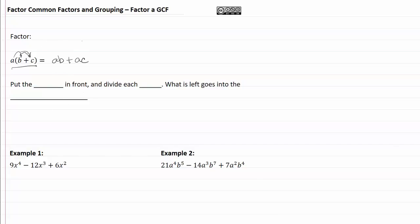Remember that a factor is something that's multiplied. We're going to put the GCF, the greatest common factor, in front and divide each term by the GCF. And then what is left over goes into the parentheses. So here is the leftover, out here is the GCF.